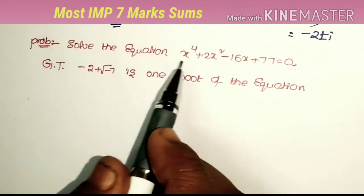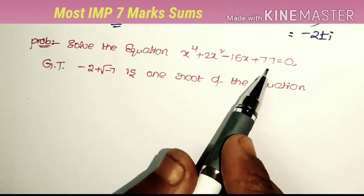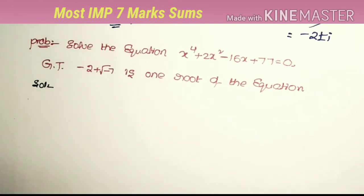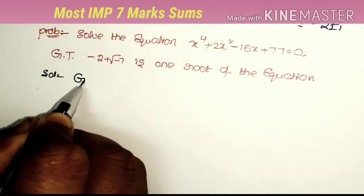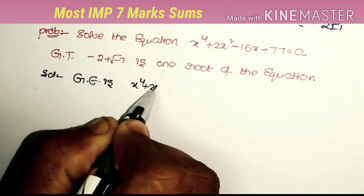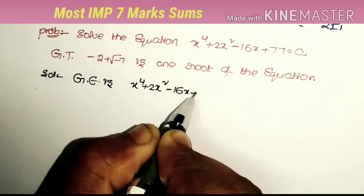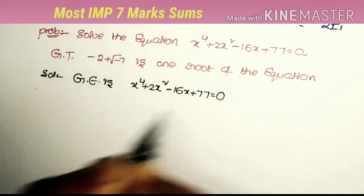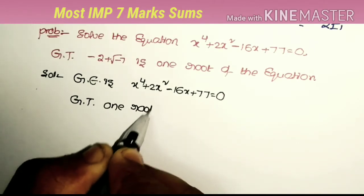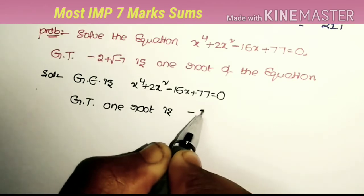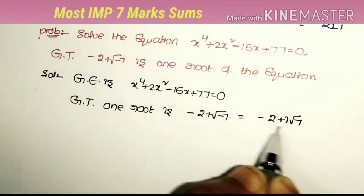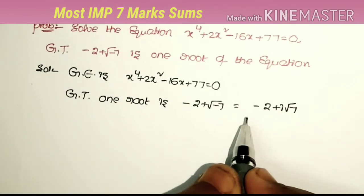Next problem: Solve x⁴ + 2x² - 16x + 77 = 0, given that -2 + √(-7) is one root. The given root is -2 + √(-7) = -2 + i√7. Using the same procedure as before.